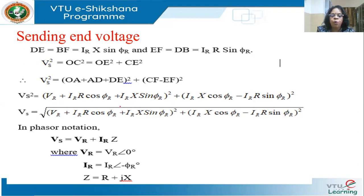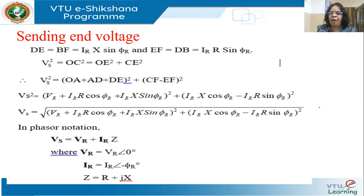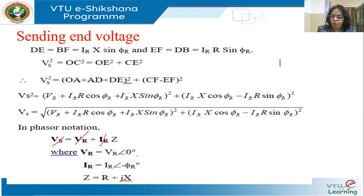VS is the square root of this expression. This gives only the magnitude, not the angle. For regulation calculations we only need the magnitude, so this is sufficient to know the sending end voltage. We can also calculate VS using phasor notation: VS = VR + IR·Z, where bold quantities are phasors. Taking VR as the reference at 0°, IR is at angle −φR for lagging loads, and Z = R + jX.